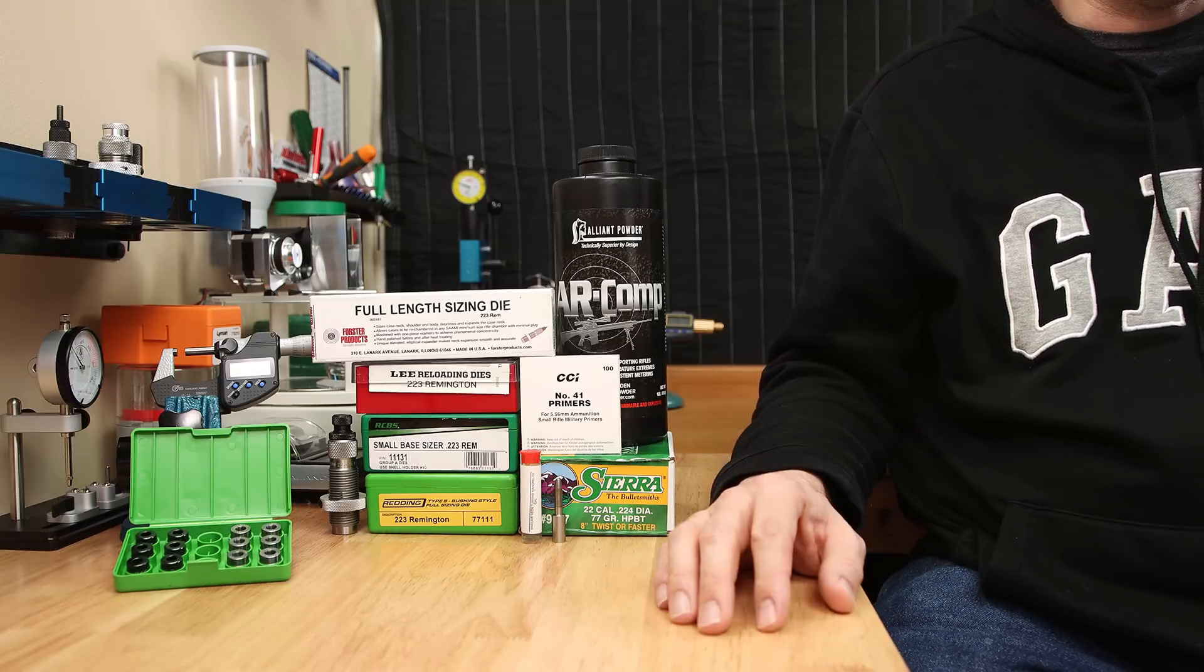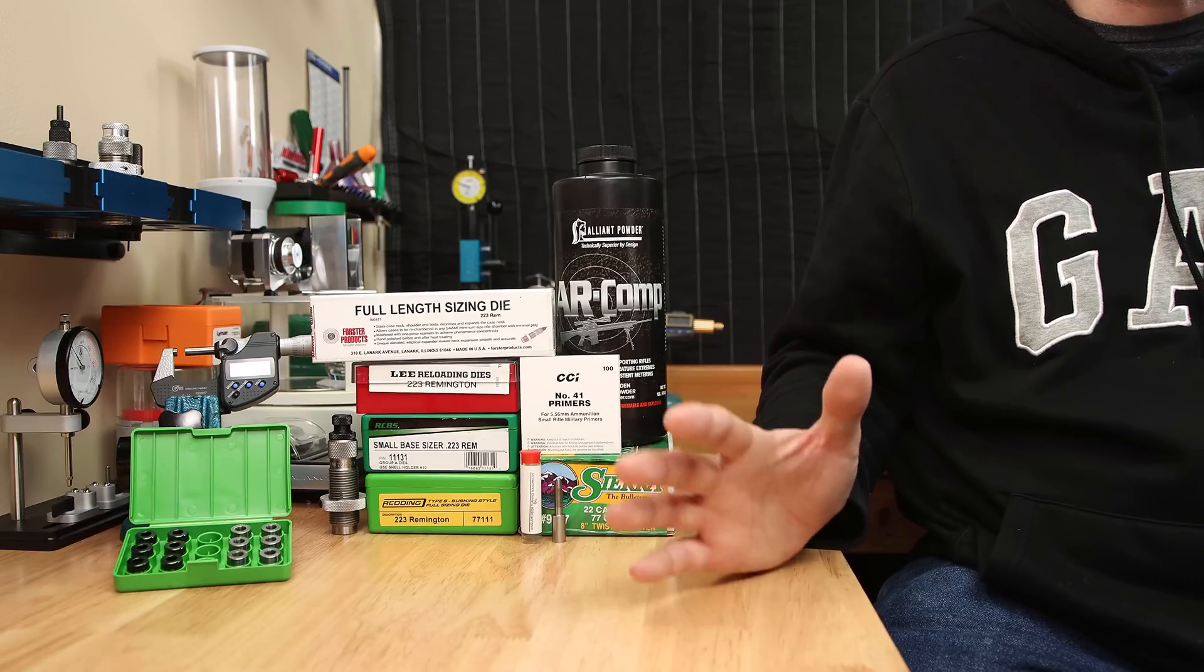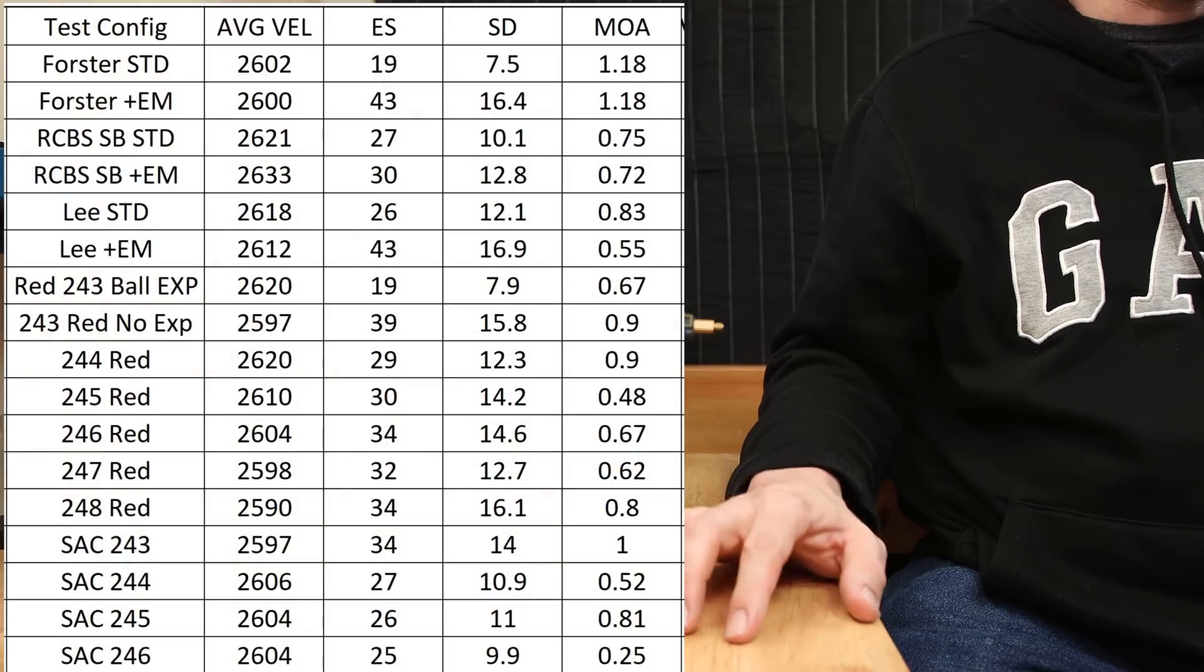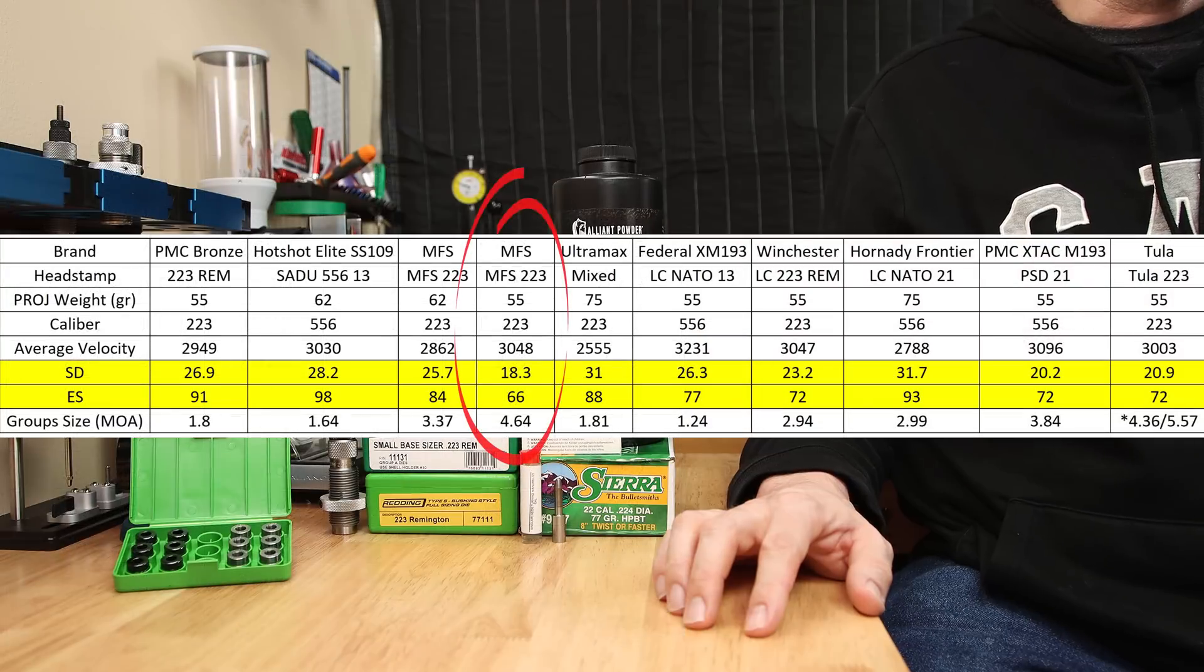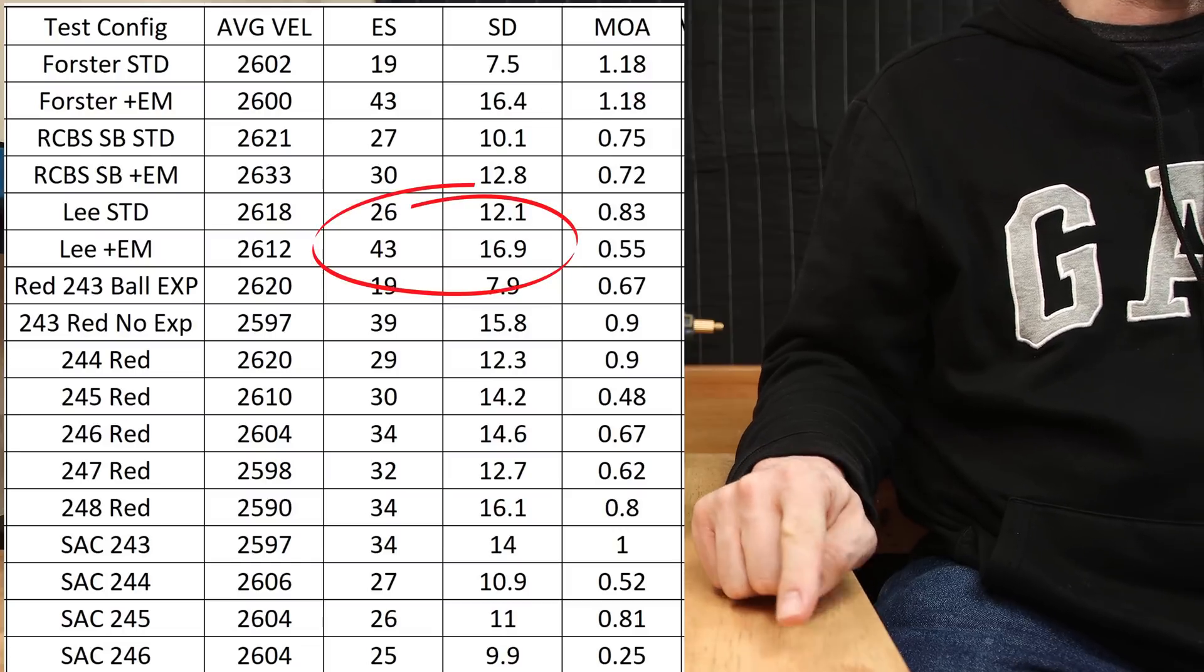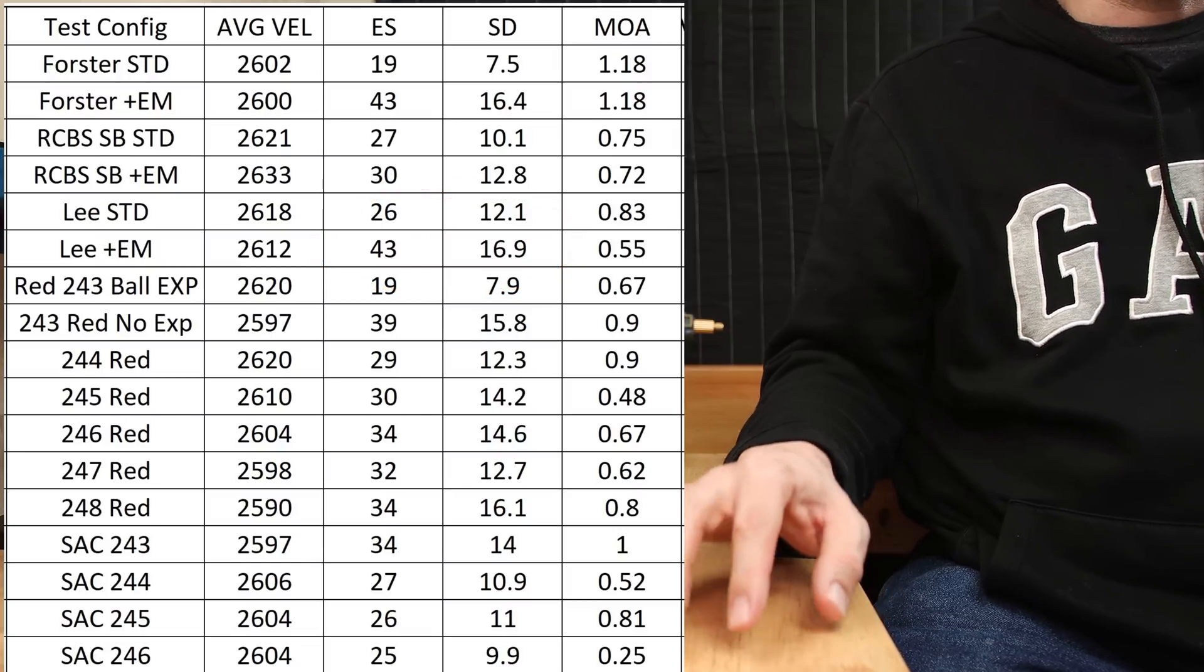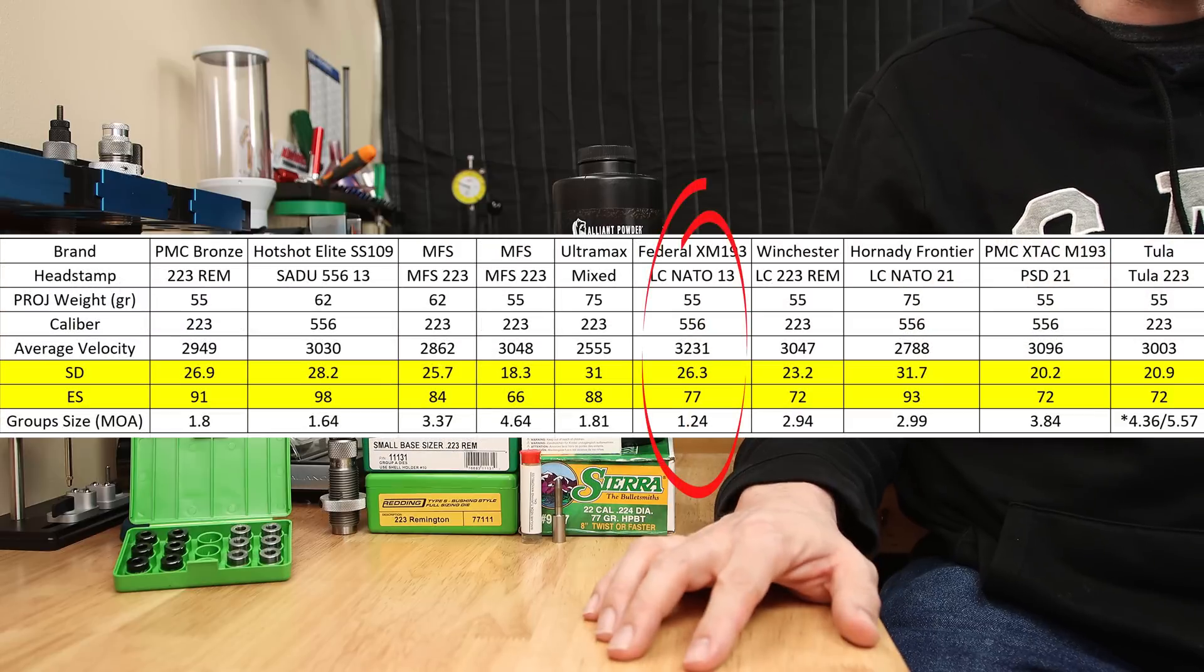I am fully aware that comparing 5 shot groups to a 10 shot group isn't exactly fair, but again, we're casting a wide net. Today, I was very encouraged that all the configurations we tested beat our factory performance. Our best factory option had a standard deviation of 18.3 and an extreme spread of 66, while our worst configuration today had a standard deviation of 16.9 and an extreme spread of 43. Our worst groups were our Forrester die with or without the expander mandrel, and that performance is still better than our best factory option.